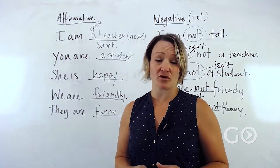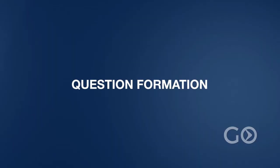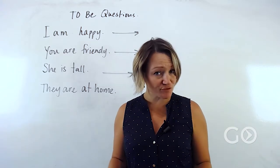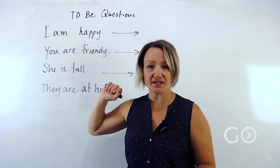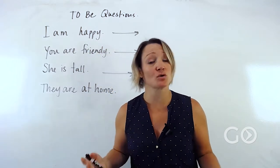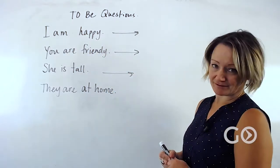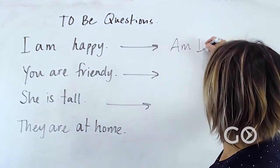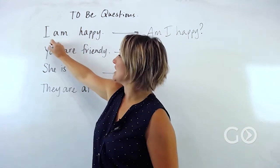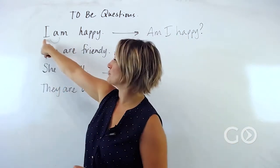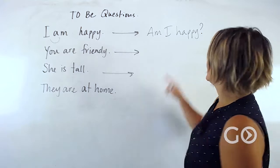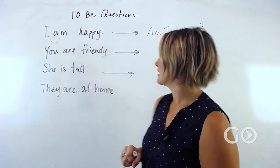Let's look at some question formation using the verb 'to be.' We're still working in the present tense. To make a question, using 'I am happy' as an example: Am I happy? Two things happened — we changed the order of the verb and the pronoun, switching them to make 'am I,' and then we add a question mark.